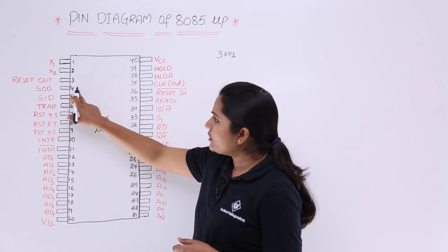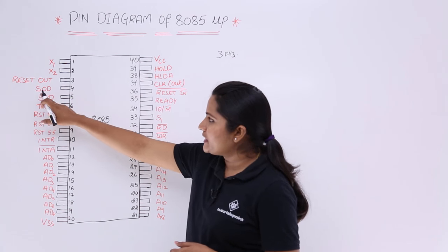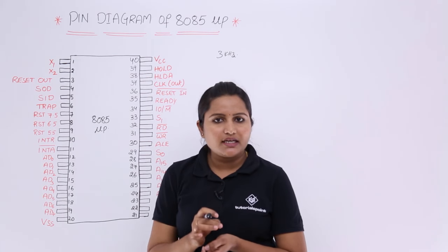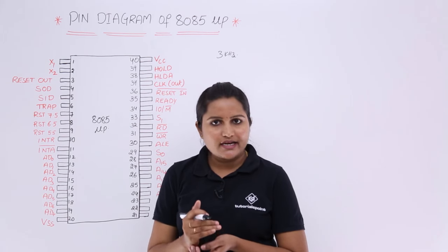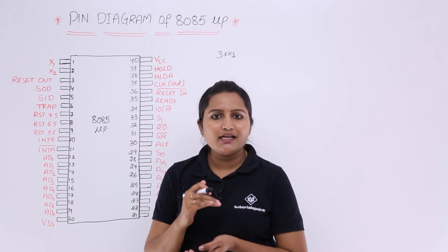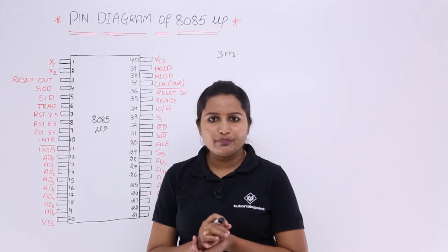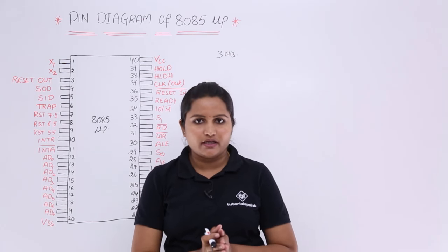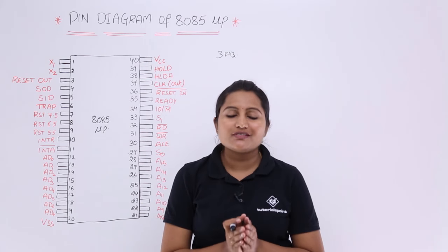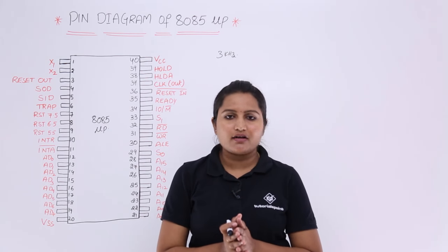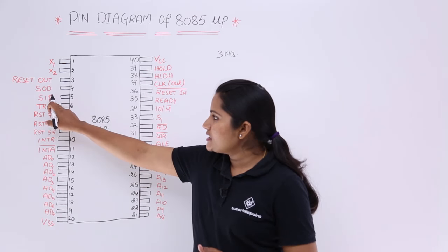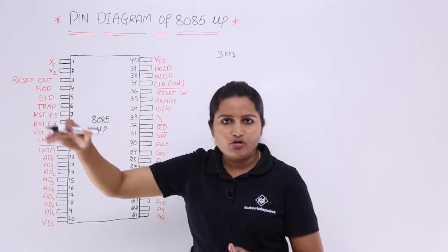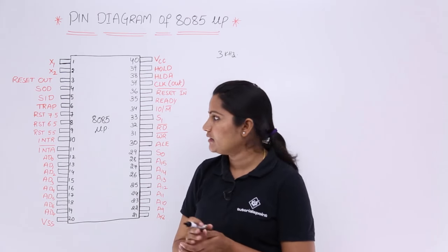Pins 4 and 5 are SOD and SID. SOD means serial output data and SID means serial input data. These 2 pins of the 8085 microprocessor are used for serial data communication — serial input data takes input and serial output data gives output of that serial data.